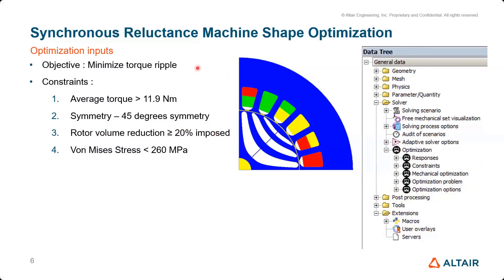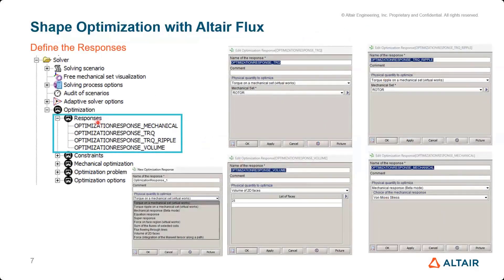For this example, the objective chosen is minimizing torque ripple, though other objectives are also available. For constraints, there is an average torque constraint, a symmetry constraint so the shape is the same on both sides of the barriers, a volume reduction constraint to reduce the weight of the rotor, and a mechanical constraint to keep stress below 260 MPa. First, you define your responses needed to set up the objective and constraints.